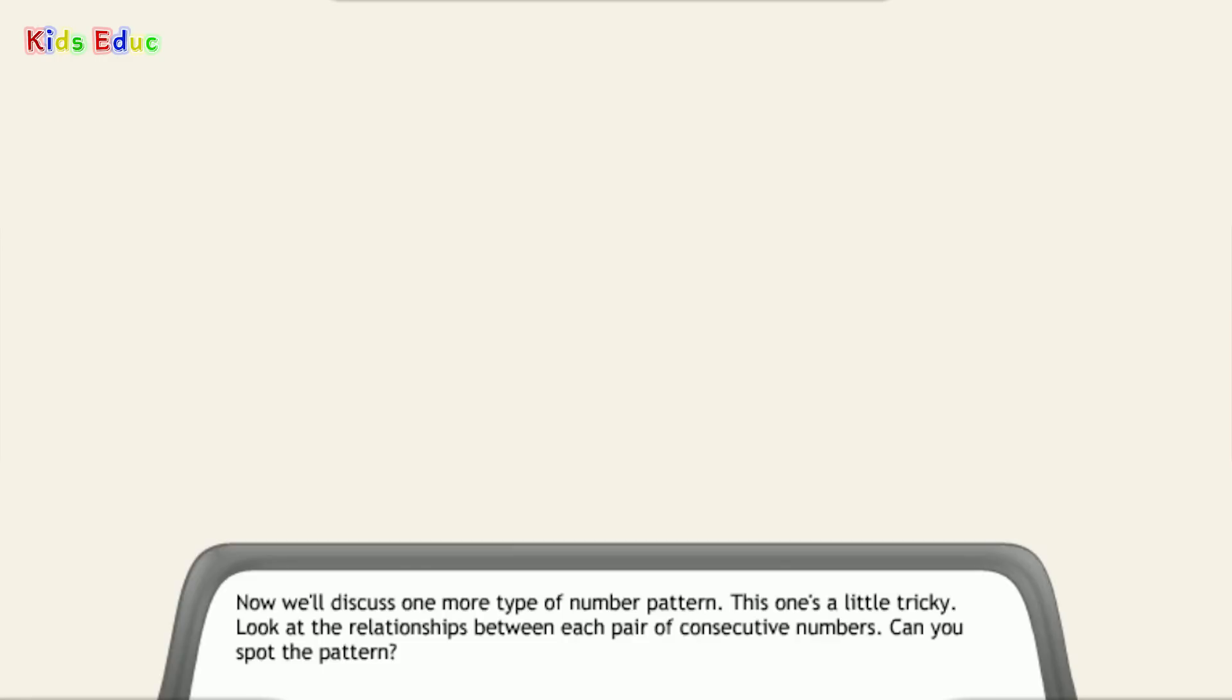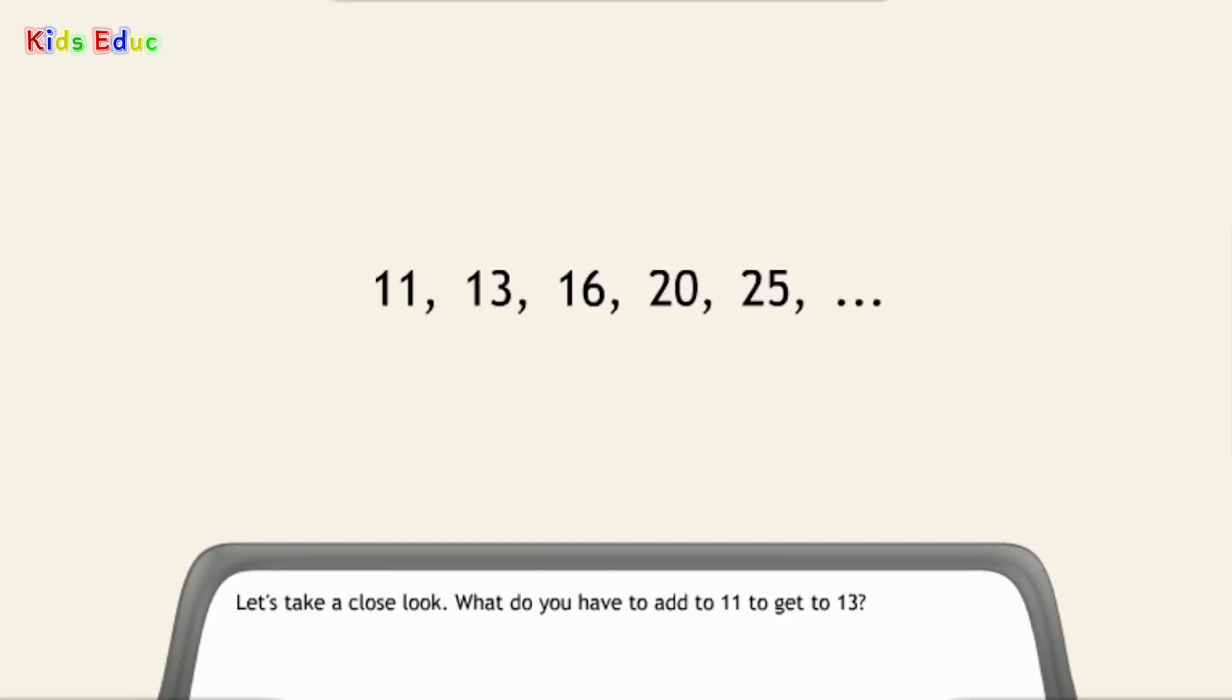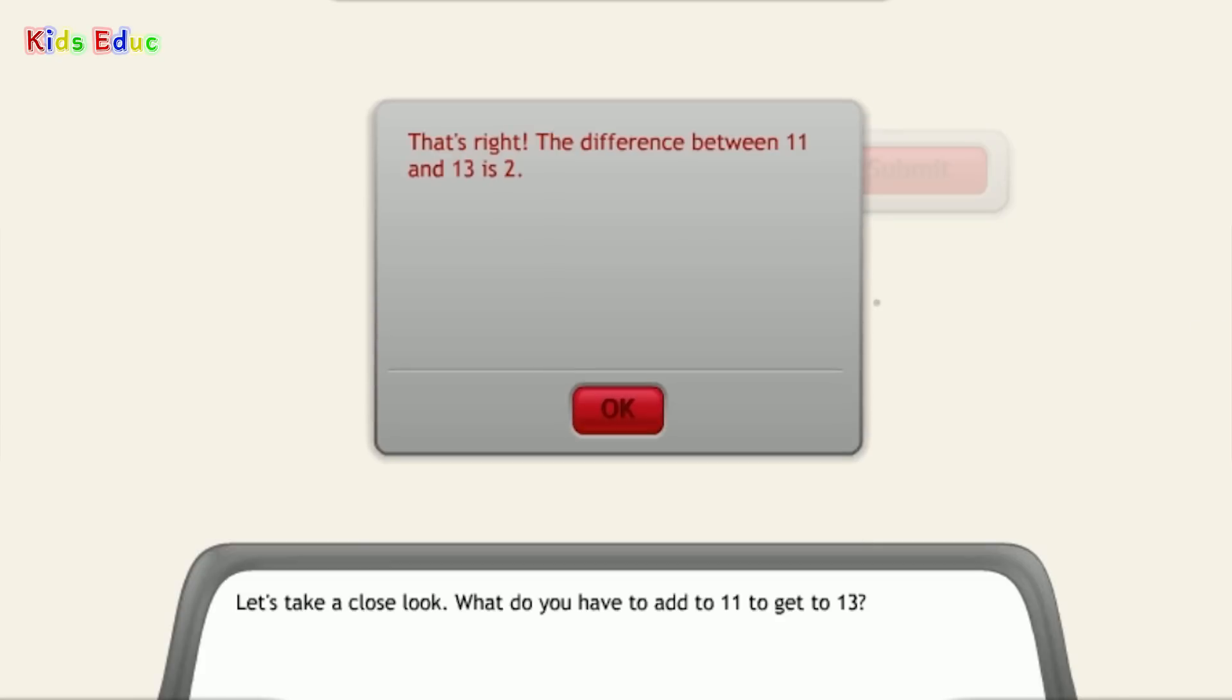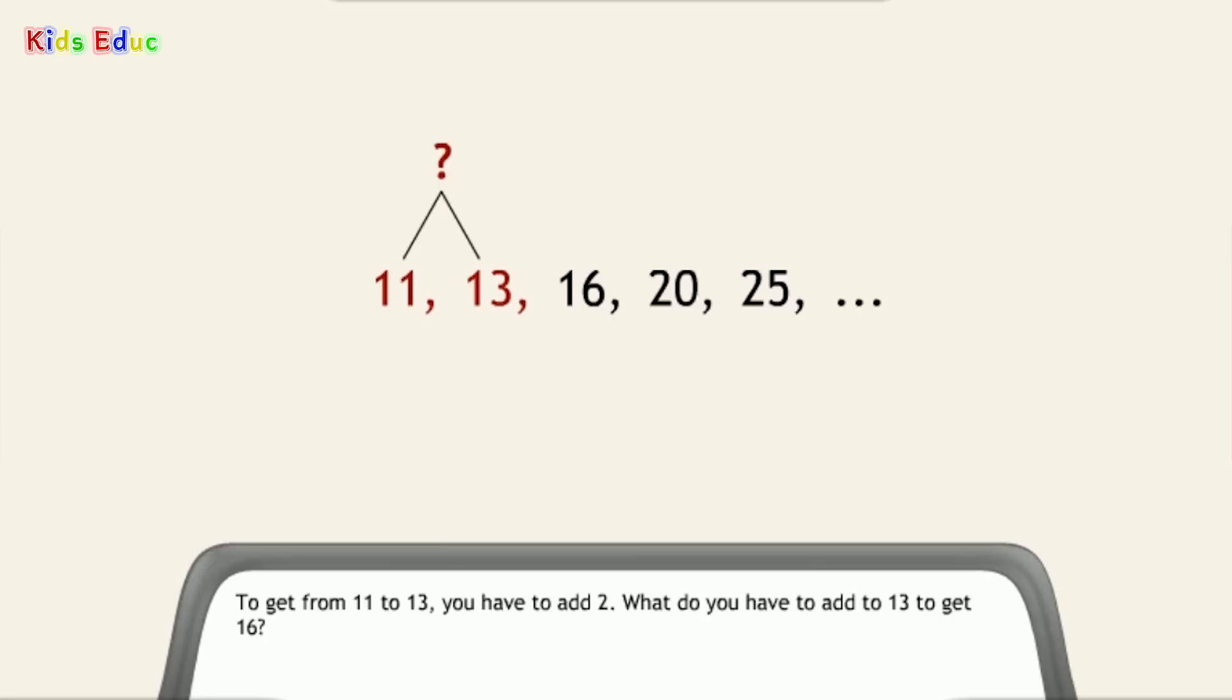Now, we'll discuss one more type of number pattern. This one's a little tricky. Look at the relationships between each pair of consecutive numbers. Can you spot the pattern? Let's take a close look. What do you have to add to 11 to get to 13? 2. That's right. The difference between 11 and 13 is 2. To get from 11 to 13, you have to add 2.